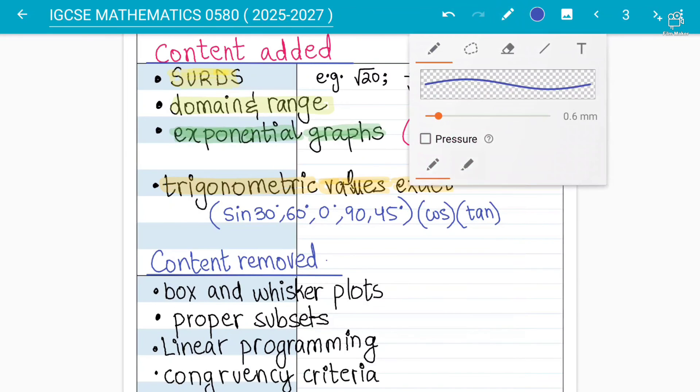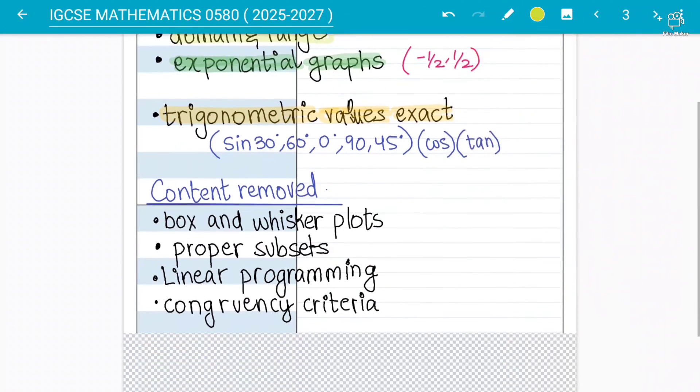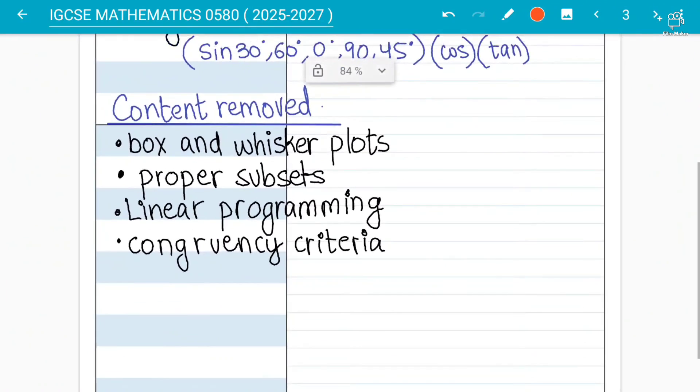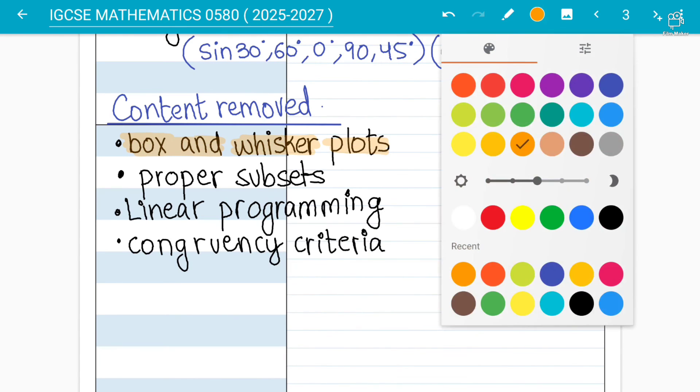To talk about what have been removed students - the syllabus part that have been removed is box and whisker. Although it was very easy according to me and my students think that it is easy topic but they have removed now box and whisker. So you can say that there are some changes from the perspective of statistics.